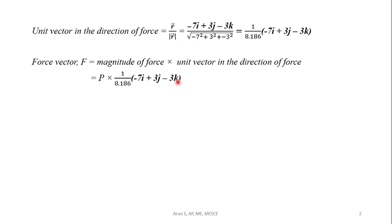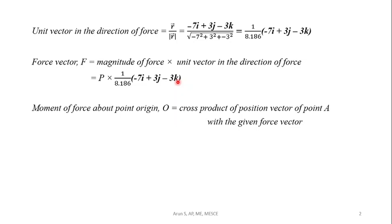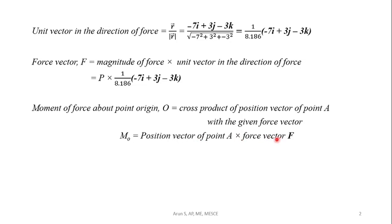The moment of this force about any point, such as origin, is given by the cross product of the position vector of point A with the given force vector. Since the force passes through point A, the moment about the origin is r_A × F. The position vector of point A is (4i + j + 4k) and the force vector is (P/8.186) × (-7i + 3j - 3k).